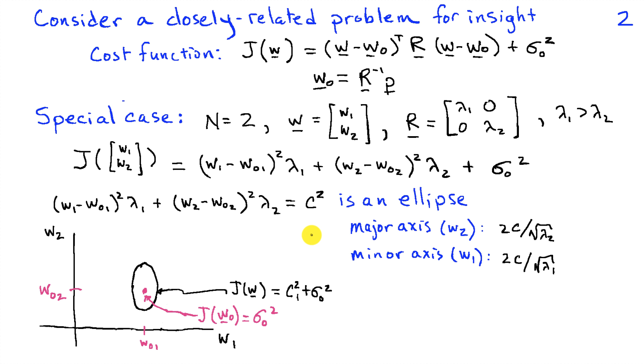The value of J is identical along those contours, and it's given by C1 squared plus sigma zero squared. If I pick some other value, C2 squared, which is greater than C1 squared, then I get another ellipse, which has larger major and minor axes, the same general shape.